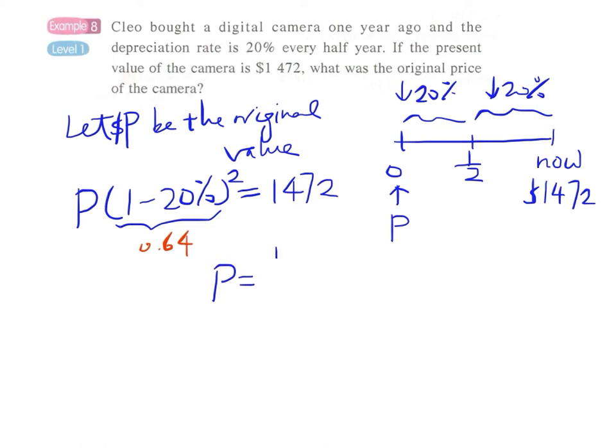By dividing 1472 by 0.64, and the answer is $2300.